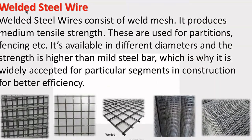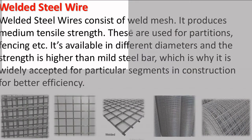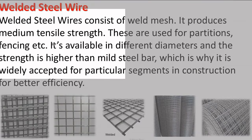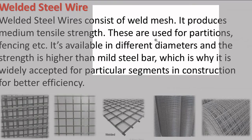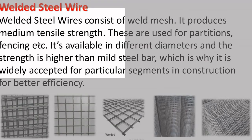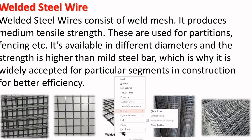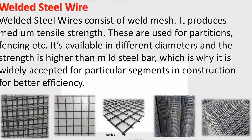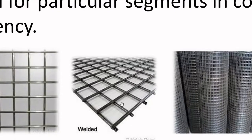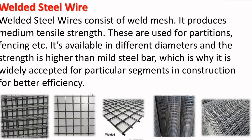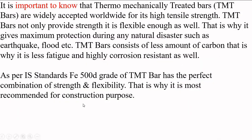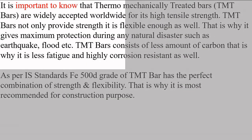Next is welded steel wire. Welded steel wire consists of weld mesh and produces medium tensile strength. These are used for partitions, fencing, etc. It is available in different diameters, and the strength is higher than mild steel bars, which is why it is widely accepted for particular segments in construction.